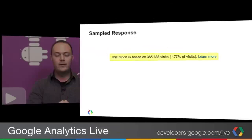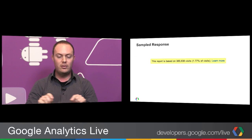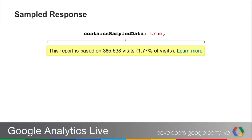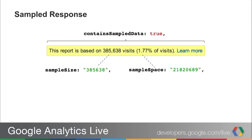In the web interface you would see a tooltip or notification on a sampled report showing the number of visits the report is based on, along with a percentage. These new API fields map directly to that: 'containsSampledData' corresponds to seeing that notification bar; 'sampleSize' corresponds to the number of visits shown in the web interface; and 'sampleSpace' allows you to calculate the coverage percentage — simply divide sample size by sample space to get the percentage of visits used, equivalent to that 1.7% figure you might see in the UI.